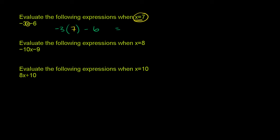And negative 3 times 7, this part right over here, is negative 21. And then we're going to subtract 6 from that. Negative 21 minus 6 is equal to negative 27.